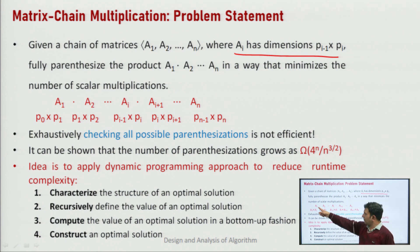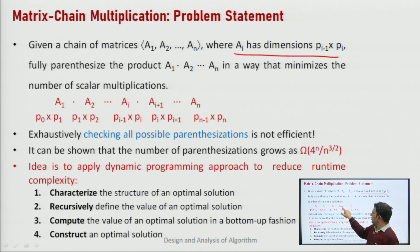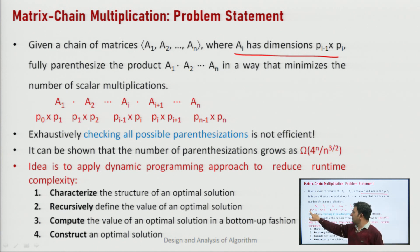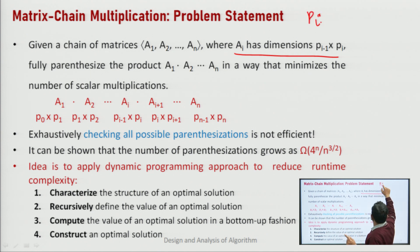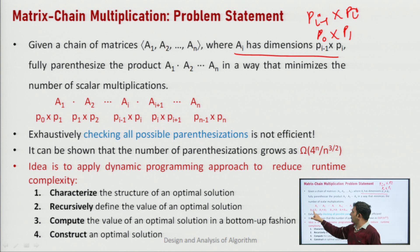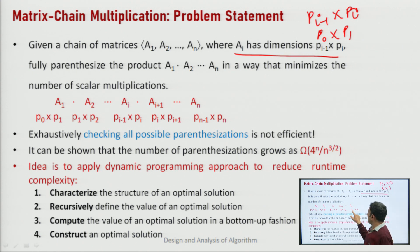We have n matrices A1, A2, ..., Ai, ..., An. The order of matrix Ai is defined as P_{i-1} × P_i. So for A1 the order is P0×P1, for A2 it is P1×P2, for A3 it is P2×P3, for Ai it is P_{i-1}×P_i, and for An it is P_{n-1}×P_n.